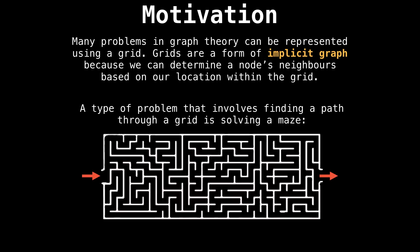For instance, finding a path through a maze is a form of a grid problem. You're trying to get from one side of the maze through the other. Well, you need to find a path; it's a pathfinding problem.